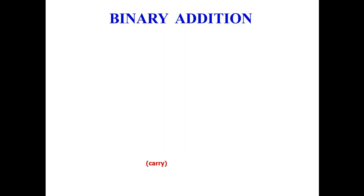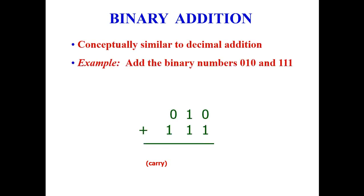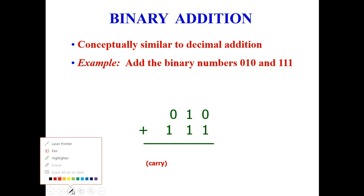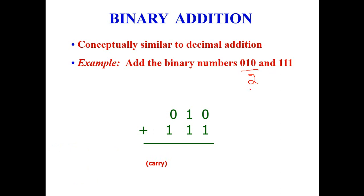Today we will discuss adder and subtractor in binary numbers. Digital computers perform various arithmetic operations; the most basic operation is the addition of two binary digits. Simple addition consists of four possible operations. For example, take the number 010 added with 111. In weighted form, 010 is 2 in decimal and 111 is 7 in decimal. Adding 7 plus 2 gives 9 in decimal, which converts back to binary as 1001.